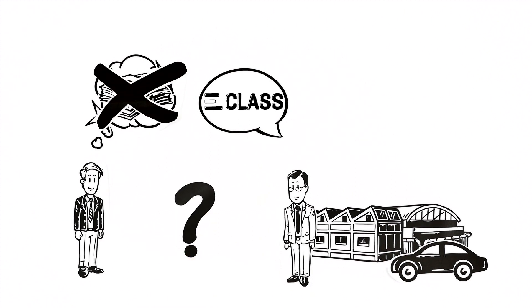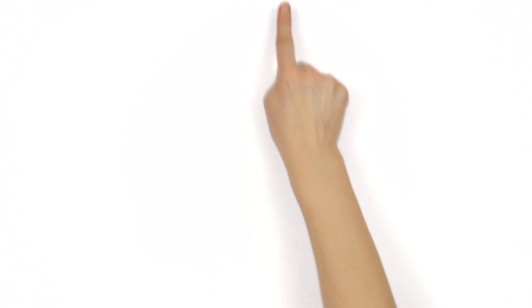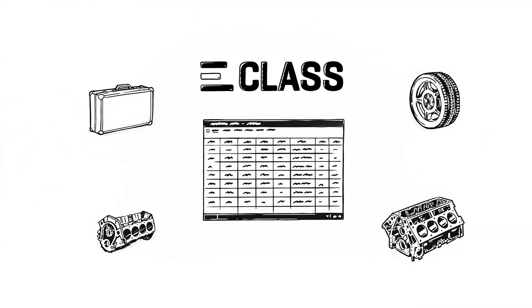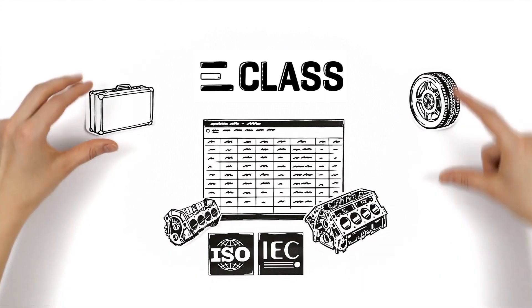But what does that mean? E-Class is a cross-industry classification system. In other words, it's a data standard allowing products and services to be described clearly using unique identifiers.